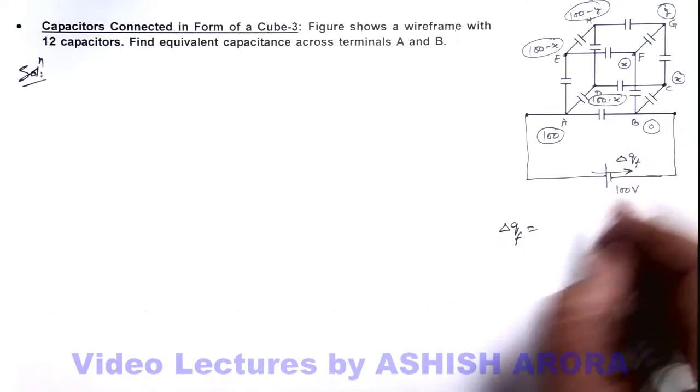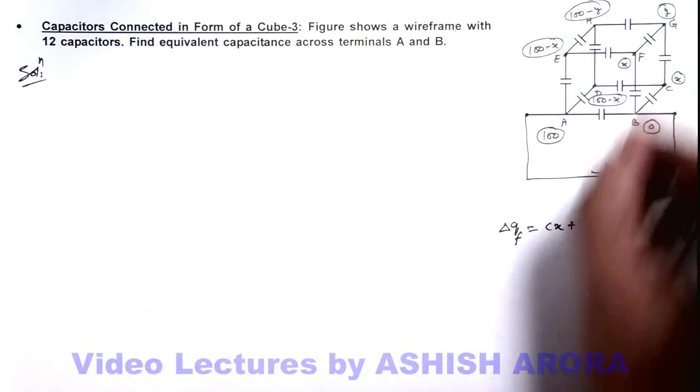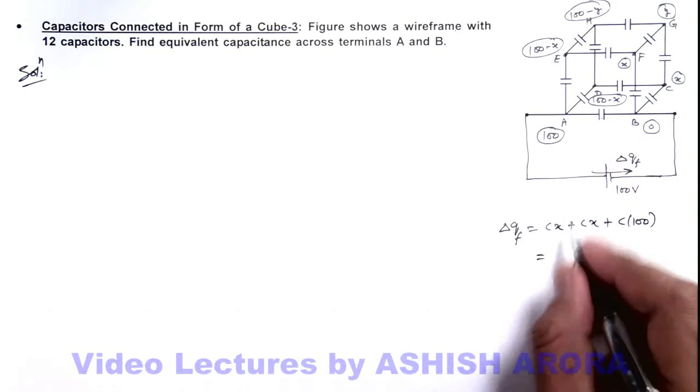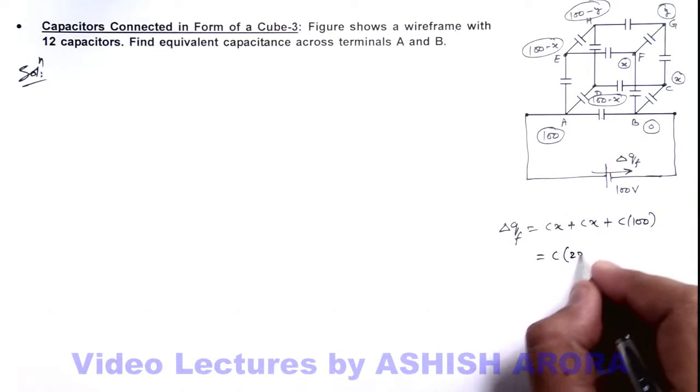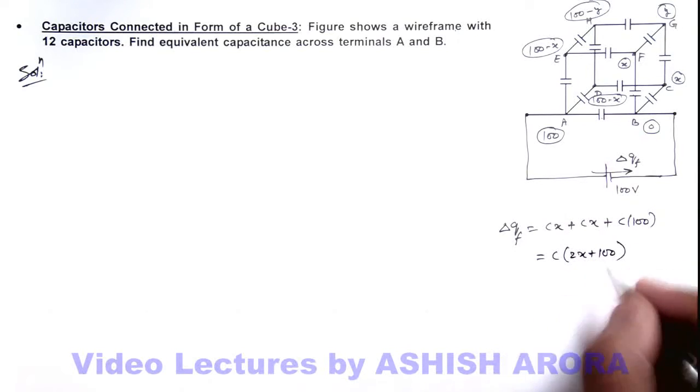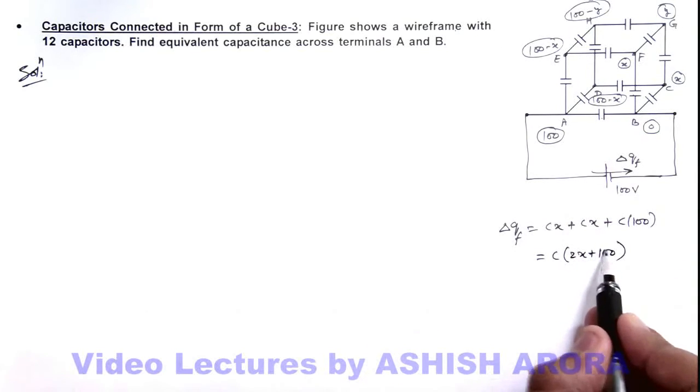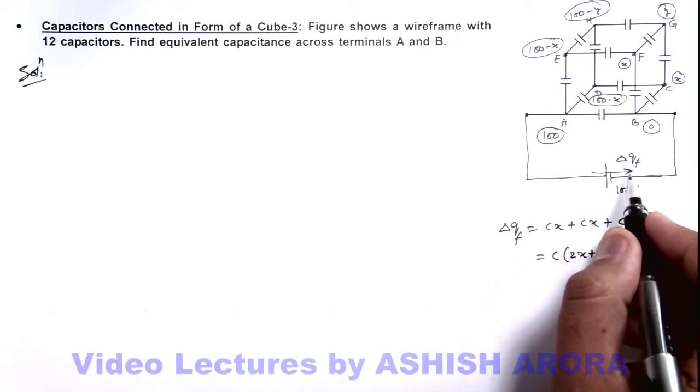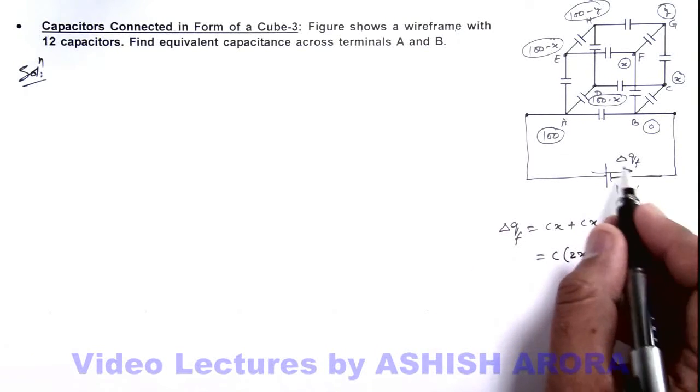So charge on this will be Cx plus charge on this is also Cx plus charge on this is C multiplied by 100. So charge flown through battery C multiplied by 2x plus 100. So if we get the value of x we can calculate delta qf and equivalent capacitance can be obtained by delta qf by 100.